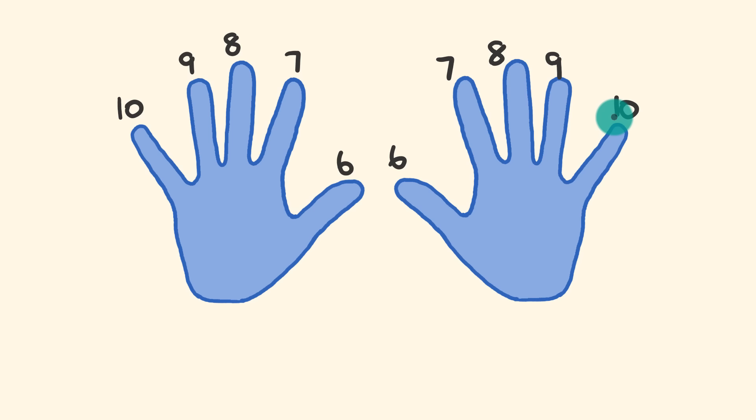Now the way that we do this trick: say we want to multiply seven times eight. We'll see what that equals. What you would do is locate the seventh finger—six, seven—that second finger along, and the eighth finger on the right hand—six, seven, eight—that third finger along. Now what we do is touch these fingers together, so touch that seven finger with the eight finger there.